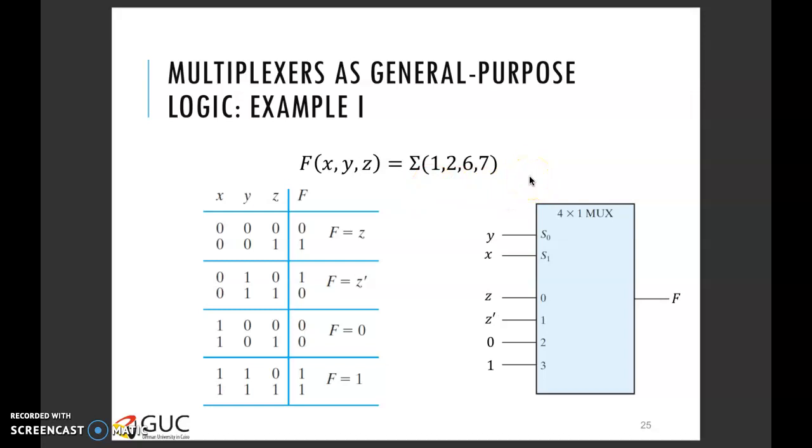So far, I've just shown you how you can actually implement any combinational logic or Boolean function representing a combinational logic function using a multiplexer. Nevertheless, I'm not telling you how this actually or why this actually makes sense. I'll be leaving that as an exercise for you. And it will be a good idea to go through different books or search online why this might be the case.